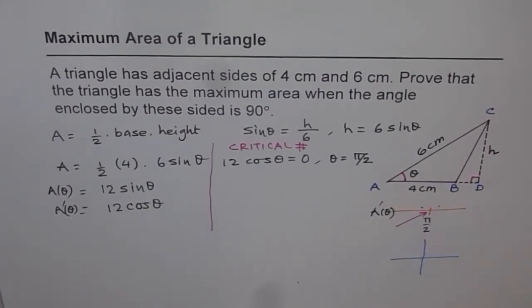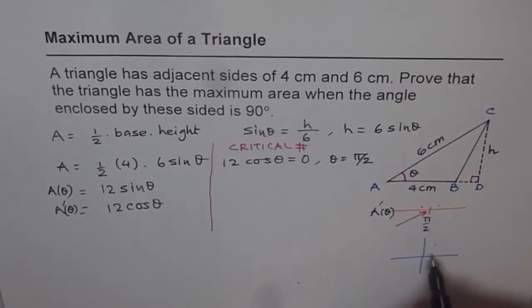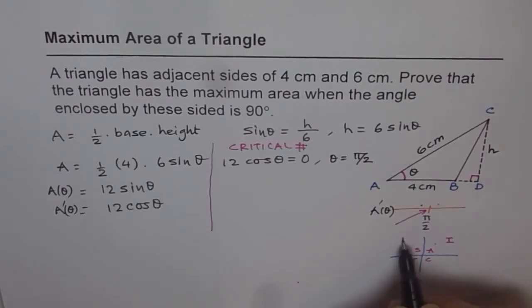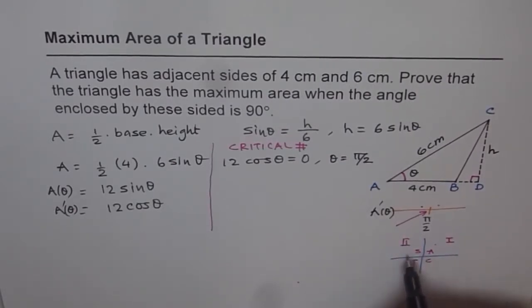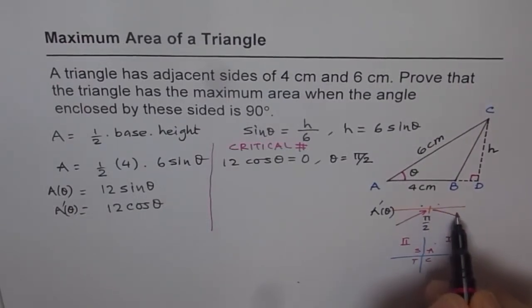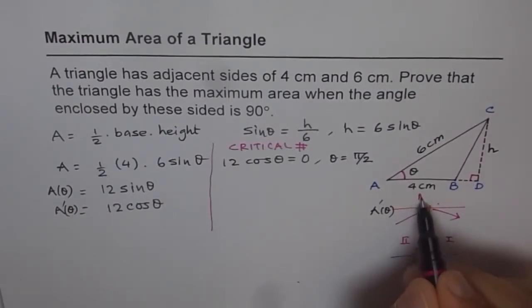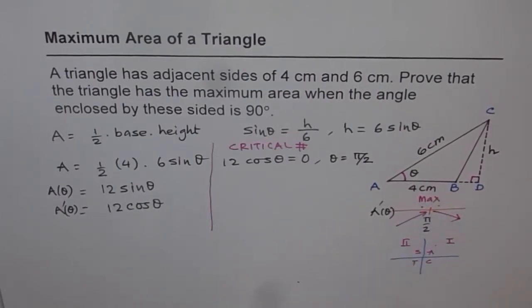So what we are saying is if theta is less than 90 degrees that means you are in this quadrant, quadrant 1. All are positive here. You remember the cos rule. But as soon as you move to quadrant 2 when theta is more than pi by 2, cos is negative. So rate of change will be going down. So you have a maximum here. This is one way to prove it.